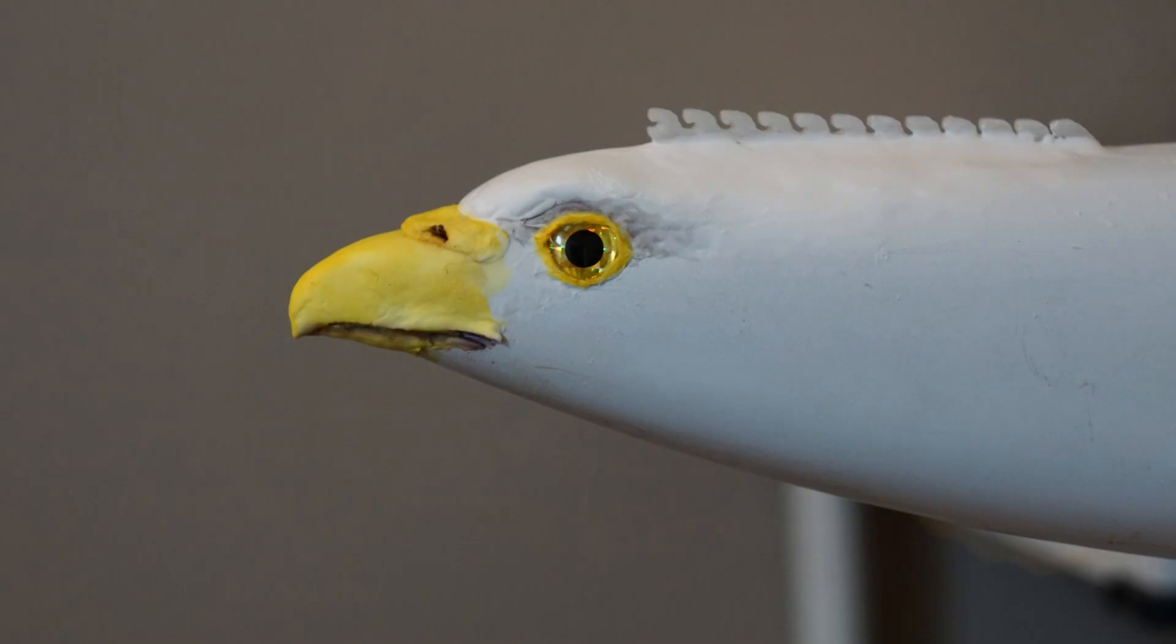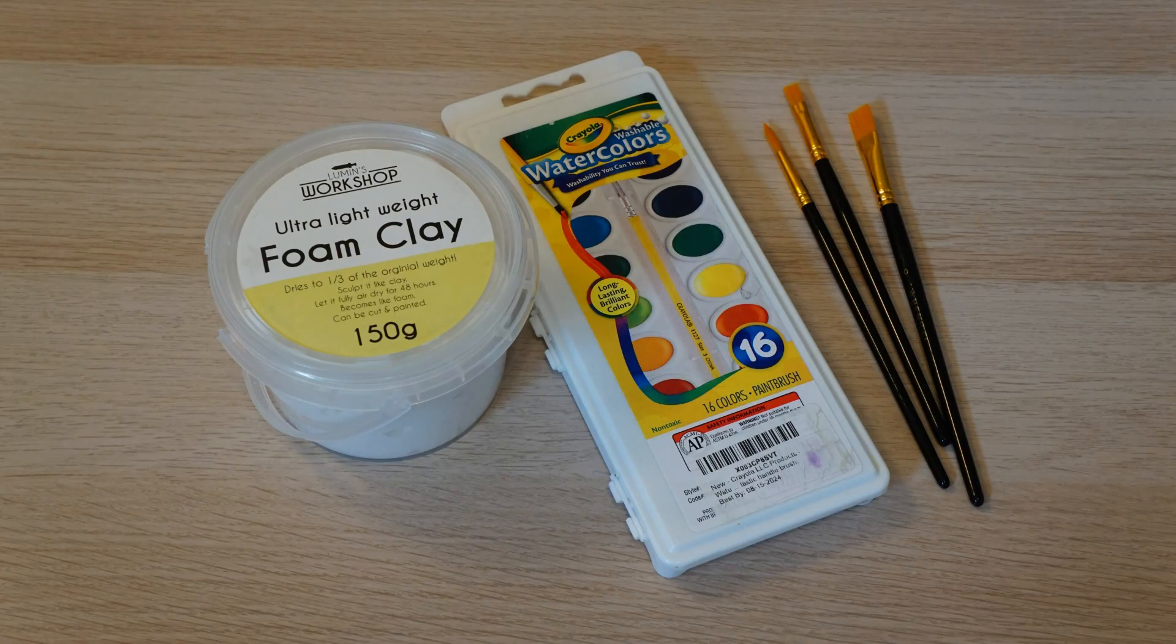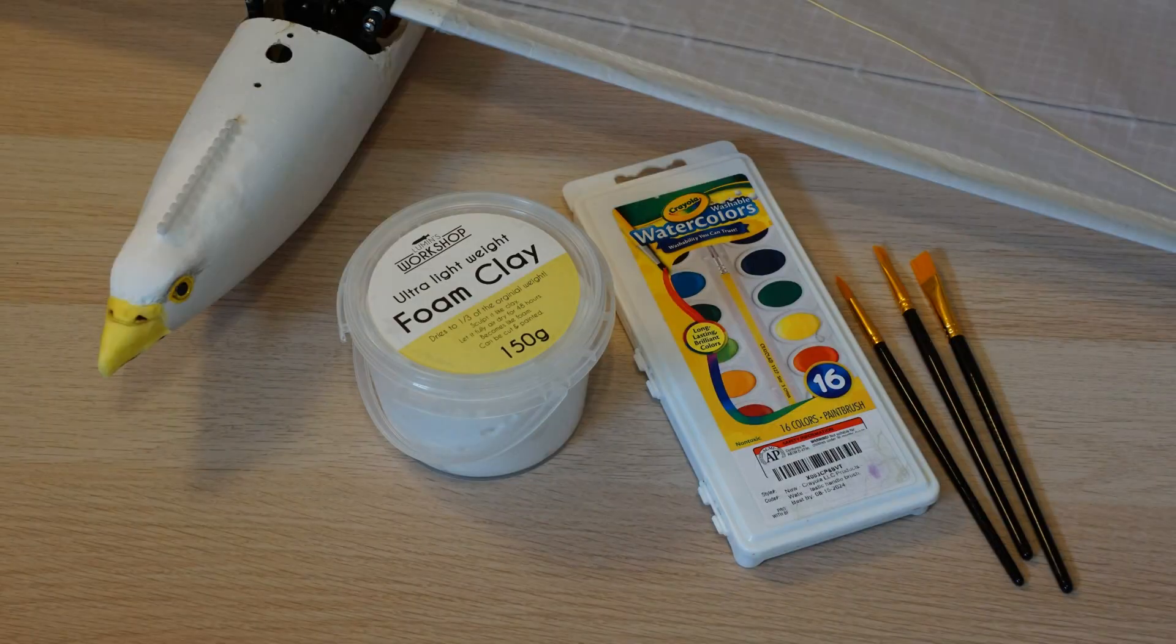The bird head modification was easy because the fiberglass body already has the right overall shape. I sculpted the beak and forehead with ultralight foam clay, and then I gave it a little paint.